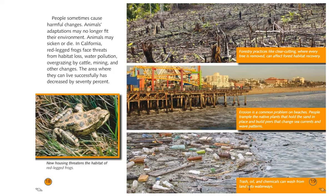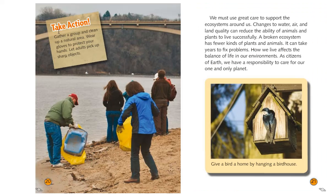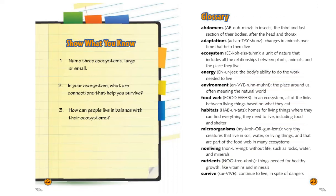Trash, oil, and chemicals can wash from land into waterways. Take action — gather a group and clean up a natural area. Wear gloves to protect your hands, and let adults pick up sharp objects for you. We must use great care to support the ecosystems around us. Changes to water, air, and land quality can reduce the ability of animals and plants to live successfully. A broken ecosystem has fewer kinds of plants and animals, and it can take years to fix problems. How we live affects the balance of life in our environments. As citizens of Earth, we have a responsibility to care for our one and only planet. One way you can help is by hanging a birdhouse to give a bird a home. Thank you for joining us for our reading today of How Ecosystems Work. Have a great rest of your day — we'll see you next time.